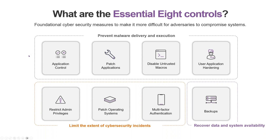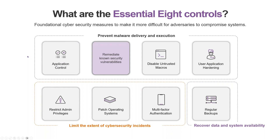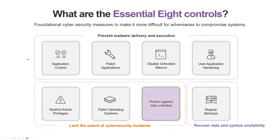Each of these Essential Eight controls has different goals. Application control — or application whitelisting — is there to prevent unauthorized software from running in your environment. We have things like remediating known security vulnerabilities, often published by our vendors. Limiting and controlling access, particularly powerful access, protecting against risky activities, and maintaining the availability of our critical data.